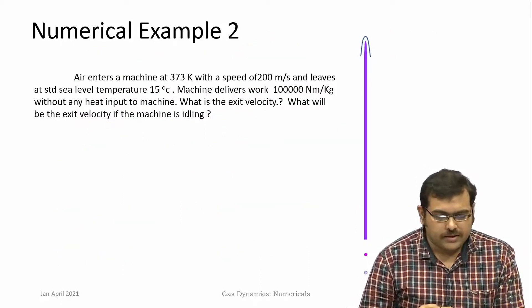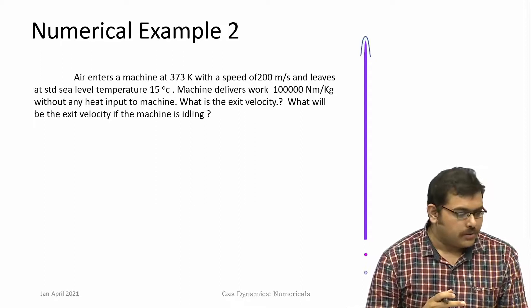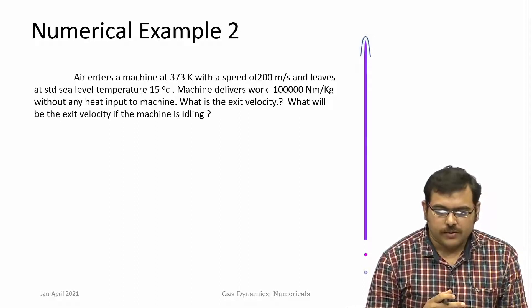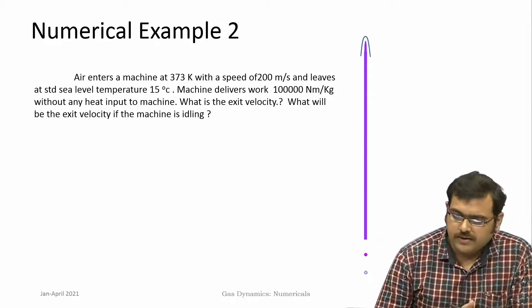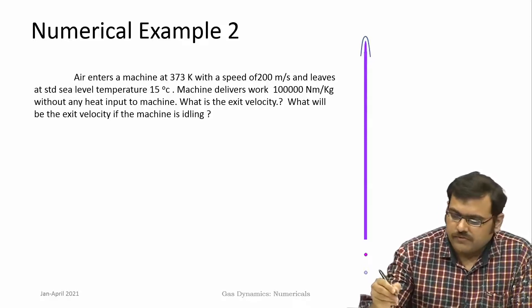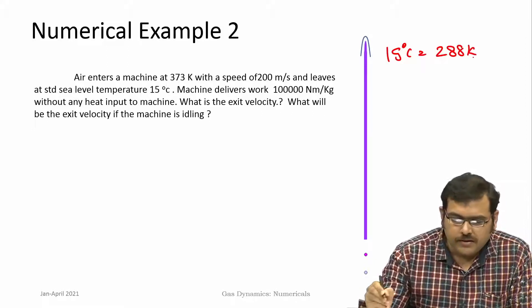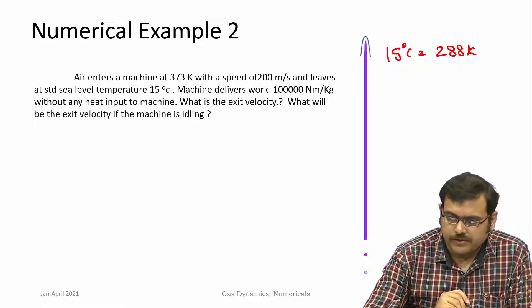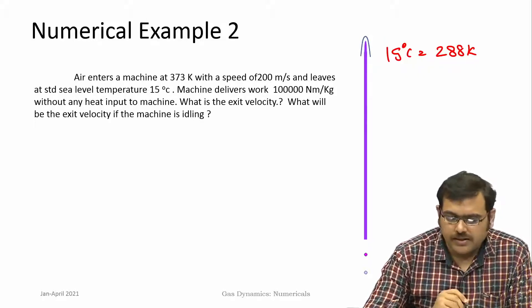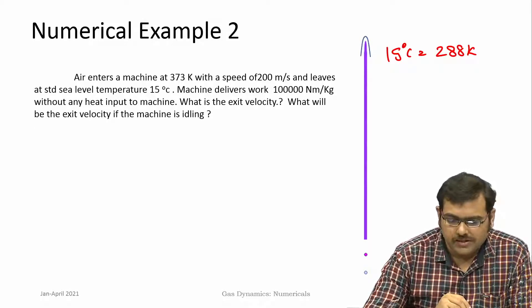Now let us look at another example which also a combination of control volume analysis and thermodynamics. Air enters a machine at 373 Kelvin with a speed of 200 meter per second and leaves at standard sea level temperature of 15 degree Celsius, which is 288 Kelvin. Machine delivers work of 100,000 joules per kg without any heat input. What is the exit velocity? What will be the exit velocity if the machine is idling?